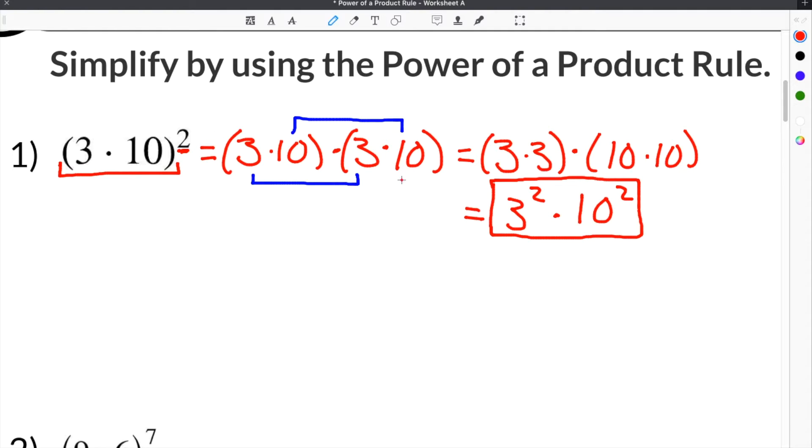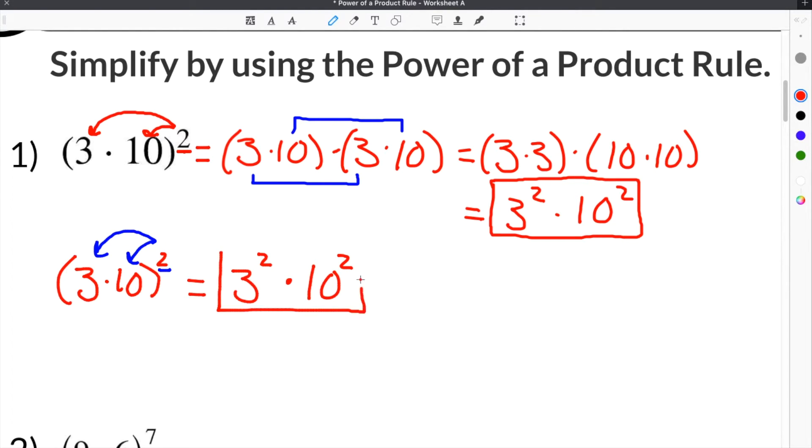Now there is a shortcut that will allow you to skip the steps in the middle. If you remember back to the power of a power rule, anytime you have an exponent on the outside of the parenthesis, you have to distribute it to everything on the inside of the parenthesis. So when we have our term 3 times 10 squared, we could easily take the 2 and distribute it to the 3 and the 10 that's on the inside of the parenthesis. So we would rewrite it as 3 to the second power times 10 to the second power. You can see that both of these answers are exactly the same and that's how you know that this shortcut will work.